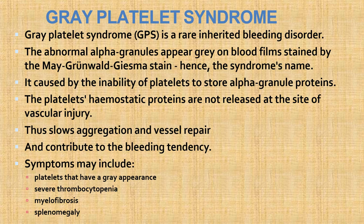Gray platelet syndrome is a rare inherited bleeding disorder; abnormal alpha granules appear gray on the blood film stained by Giemsa stain, hence the syndrome name. It is caused by the inability of platelets to store alpha granule proteins, so platelet hemostatic proteins are not released at the site of vascular injury. This slows aggregation and vessel repair, contributing to bleeding tendency.